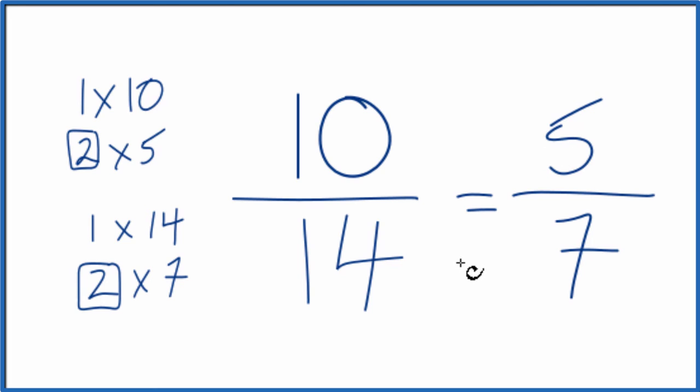So we've simplified 10 14ths down to 5 7ths, and we can't simplify or reduce this any further. It's in lowest terms.